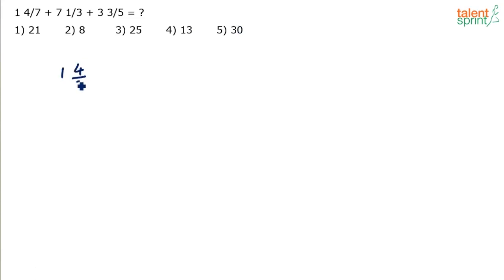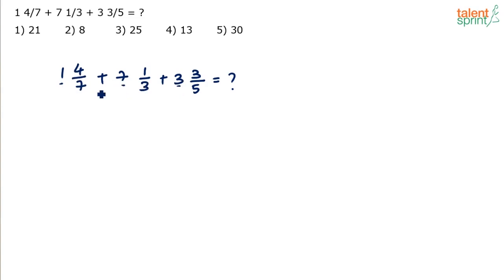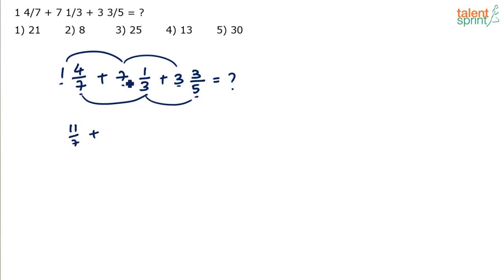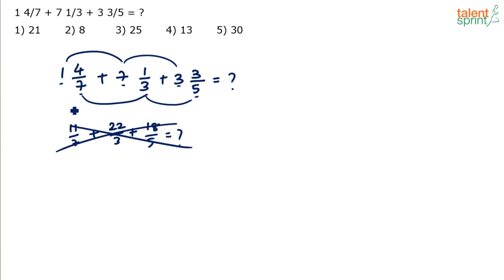Looking at the question: 1 and 4/7 plus 7 and 1/3 plus 3 and 3/5. Recalling our discussion of simplifications — whenever we have additions and subtractions involving fractions, it is always best to deal with the integer part separately and the fraction part separately, then combine them for the final answer. There is no point converting everything to improper fractions, as that only makes the solution lengthy.